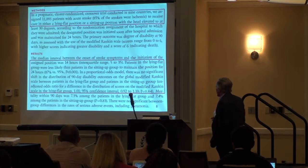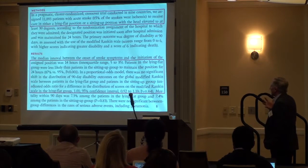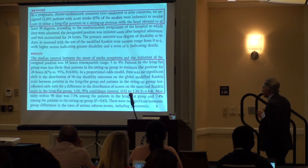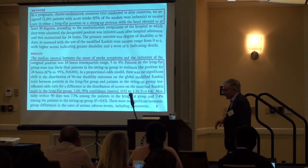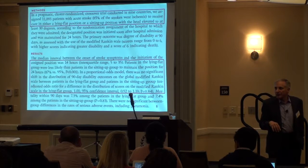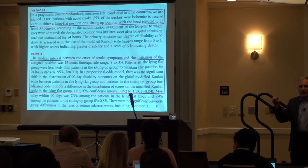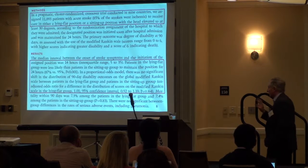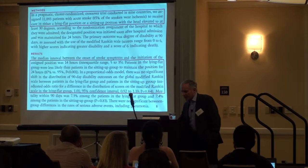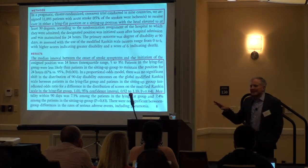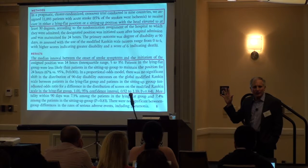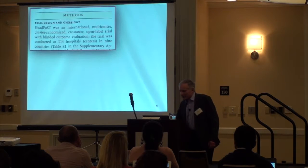Using a proportional odds model, there was no significant shift in the distribution of the 90-day modified Rankin scale. The point estimate for the common odds ratio was 1.01 — when I see an odds ratio of 1.01, that's a trial telling you it doesn't matter. Every other outcome aligned with zero effect, except for the EQ-5D quality-of-life measure, where there was a highly significant difference. I have no clear explanation for that.